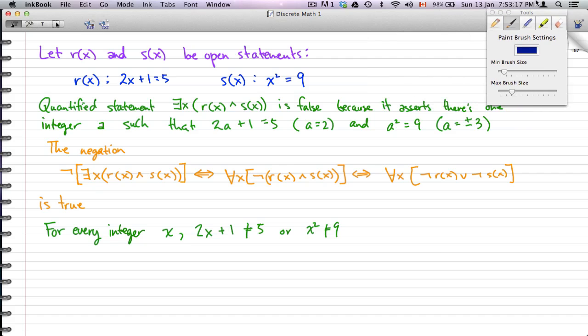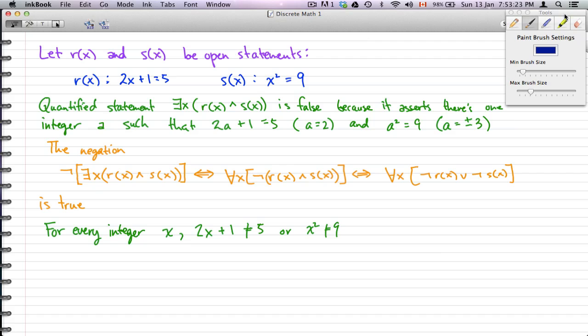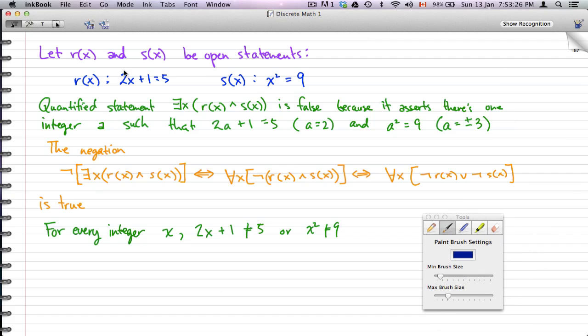Let r(x) and s(x) be open statements where r(x): 2x + 1 = 5, and s(x): x² = 9. The quantified statement exists x [r(x) and s(x)] is false because it asserts that there is an integer such that 2x + 1 = 5 and x² = 9.